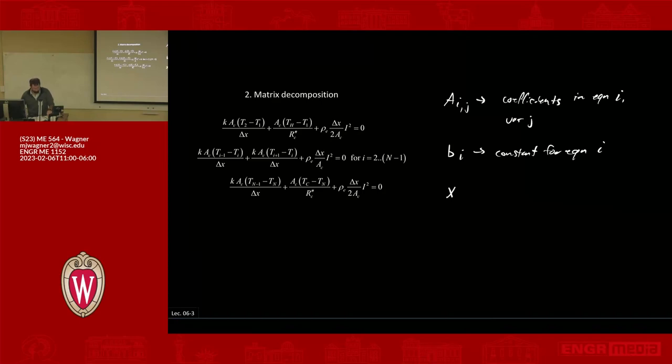Our x matrix is going to be x equals t1, t2, so on, to tn. And our a, b matrices are basically corresponding to row 1 is the control volume 1 equation, row 2, CV2 equation, et cetera.